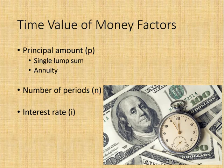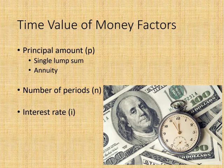There are several key factors or terms when discussing time value of money. The principal refers to the amount of the investment or borrowing, stated either as a single lump sum or as an annuity. An annuity is a series of equal payments over time. For example, if you want to save money for a new car after college, you might invest a single lump sum of $10,000 in a CD.